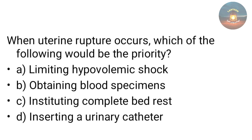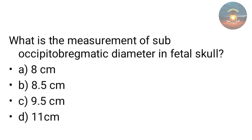When uterine rupture occurs, which of the following would be the priority — limiting hypovolemic shock, obtaining blood specimens, instituting complete bed rest, or inserting a urinary catheter? The answer is limiting hypovolemic shock. Also, the sub-occipitobregmatic diameter of the fetal skull measures 9.5 cm.